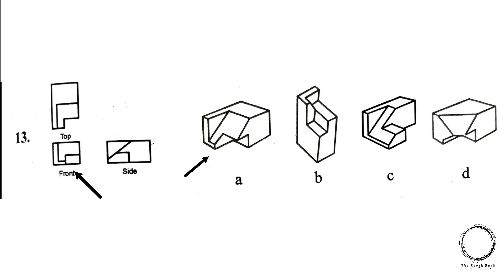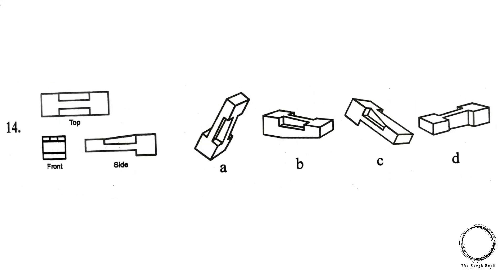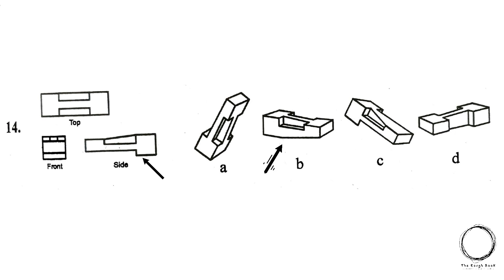Moving on — this one is slightly confusing, but starting with the top view only option A qualifies. Cross-checking with the front and the side, the right answer is option A. Next, starting with the top view there is an eye-shaped surface present in options A, B, and D. Further clarifying with the front and side view, we might be confused between options, but the right answer is option A because the object is rotated and the side, front, and top view are at a rotated angle.